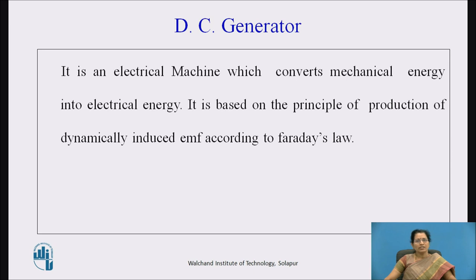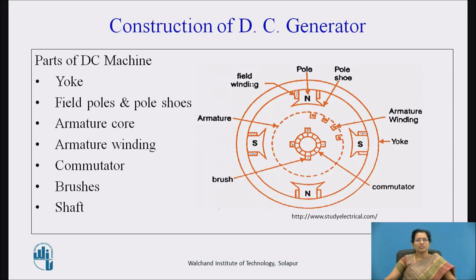Now let us see about the construction of DC generator. To create the magnetic field, poles are used, and to rotate the conductors, armature is used. These are the parts of DC machine: yoke, field poles, pole shoes, armature core, armature winding, commutator, brushes, and shaft.